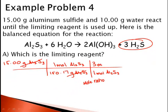The coefficient in front of H2S is a 3, so 3 moles of H2S. This should be H2S because that's the mole ratio. 3 moles of H2S to 1 mole of Al2S3.